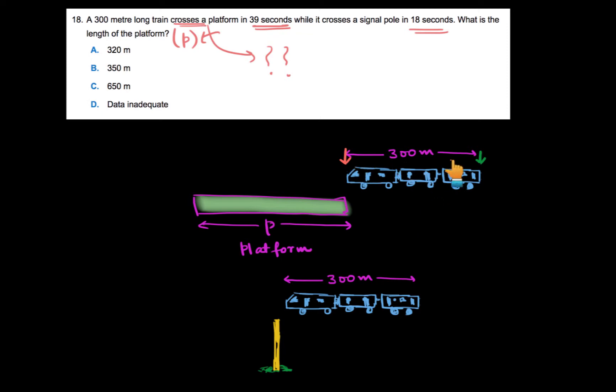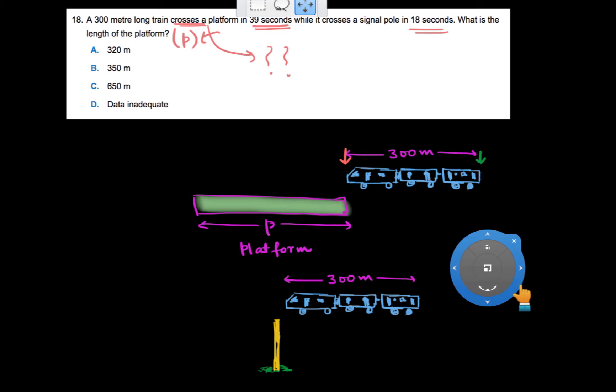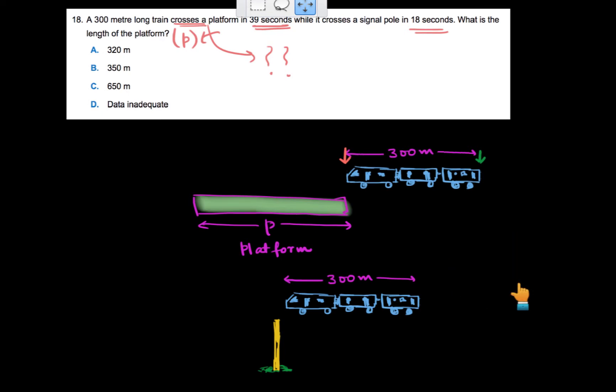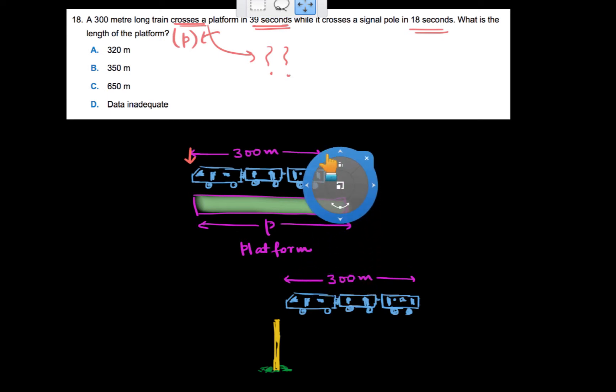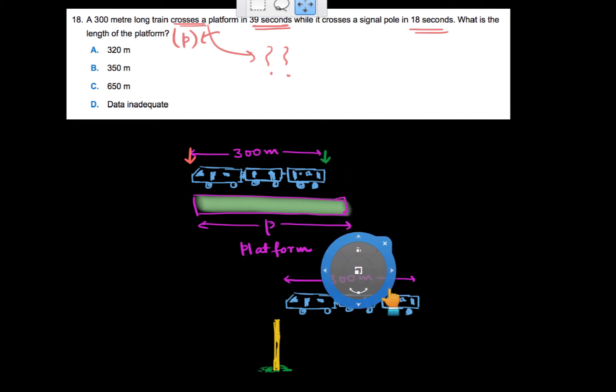So this is our train, 300 meters long, and this is our platform of length P. This is the starting point of the train and this is the end point. Now when we see that this train has crossed the platform, let's actually see what's happening. So it started crossing, the first point is crossing, the whole train is crossing the platform. So the first point has travelled a distance of P till now. But can we say that the train has crossed the platform? I don't think so, because the train is still on this platform. This end part of this train, this last end part shown by green arrow, is still on the platform.